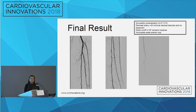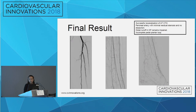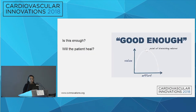We achieved successful recanalization of the anterior tibial CTO. The peroneal artery was left with minimal residual stenosis and no dissection. However, the distal runoff in the DP remains impaired, with an incomplete plantar loop. The question we asked ourselves at the cath table: is this enough? Will the patient heal?